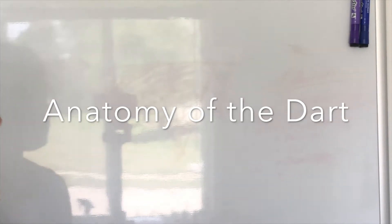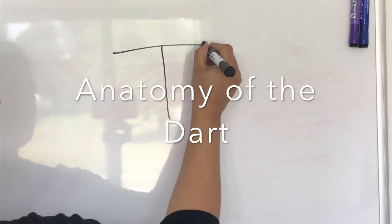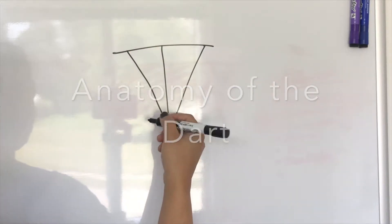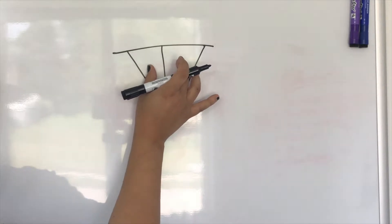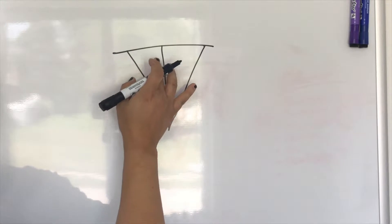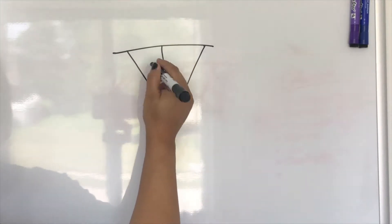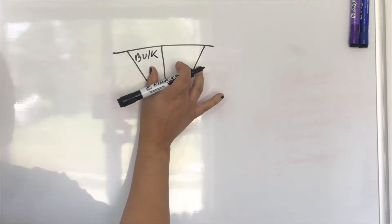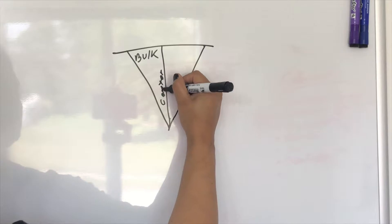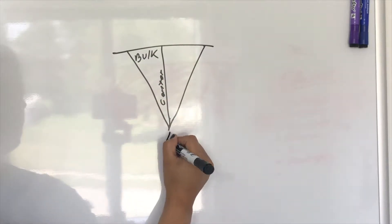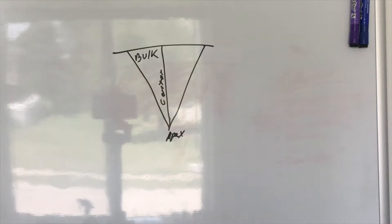I'm going to show you the anatomy of a dart. This is an example — please don't think this is the way a dart always looks in general. Normally the two portions on either side are supposed to be the same size — whatever the total of the dart is, it should be half here and half here. This area is called the bulk. This line here is called the center line. This part here is called the apex, which is the point at the end.